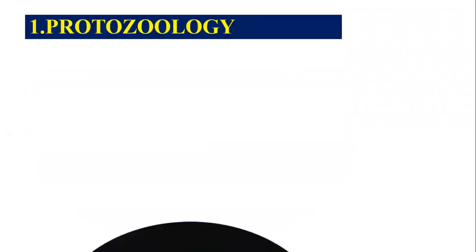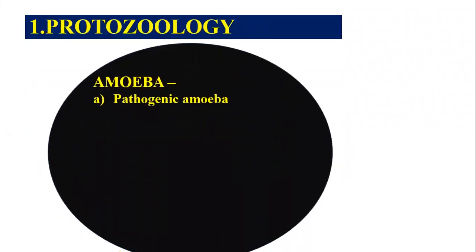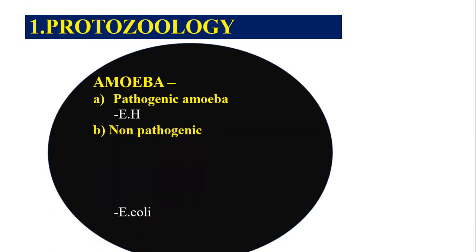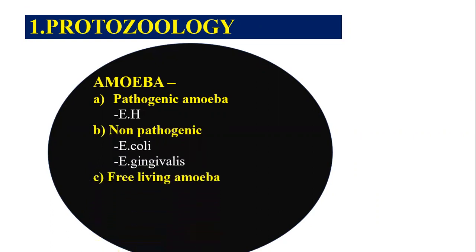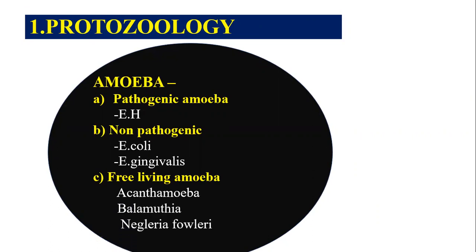Under amoeba, we have the important parasite that is pathogenic amoeba, that is Entamoeba histolytica. Non-pathogenic amoeba includes Entamoeba coli and Entamoeba gingivalis. The third type is the free-living amoeba, with the short name ABN — A for Acanthamoeba, B for Balamuthia, N for Naegleria. These are the parasites present in amoeba: pathogenic, non-pathogenic, and free-living amoeba.